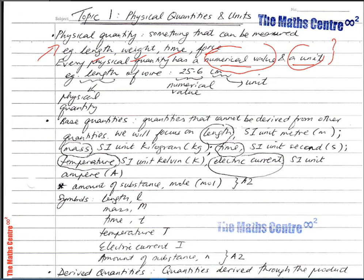For example, the length of a piece of wire is a physical quantity. If it is 25.6 cm long, then 25.6 is the numerical value and cm is the unit.